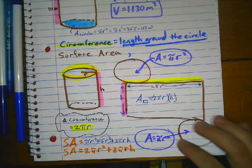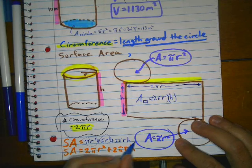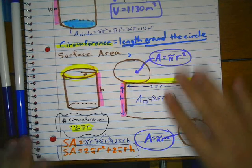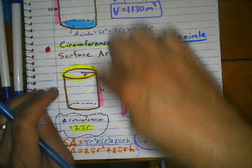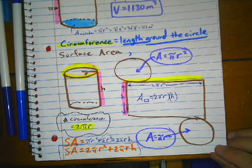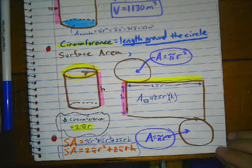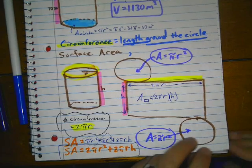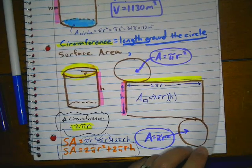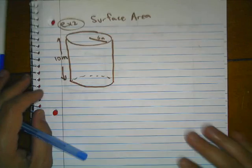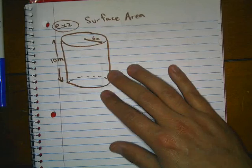That is our surface area formula — we use it to calculate the sides of the can plus the top and the bottom. If you need help, watch the video again or ask during office hours. Now let's look at two examples. Let's find the surface area.